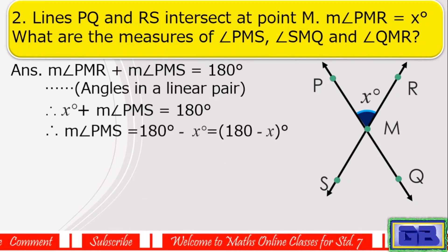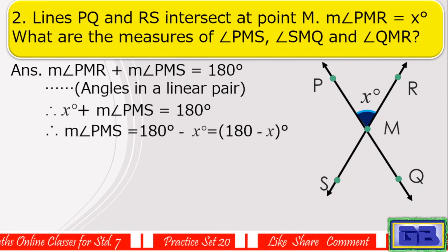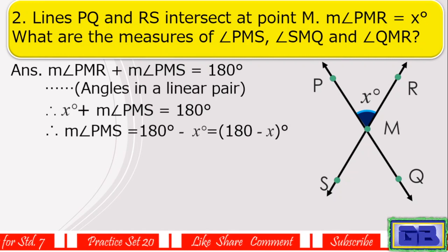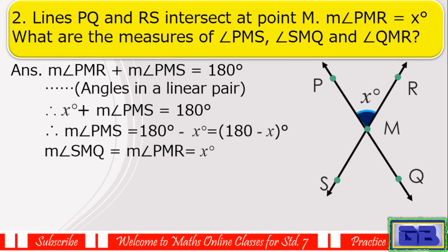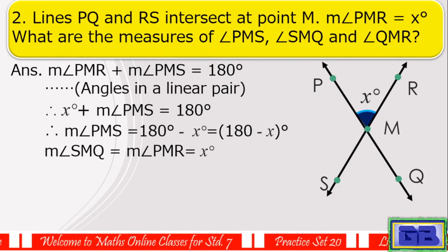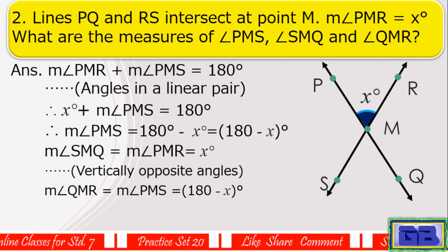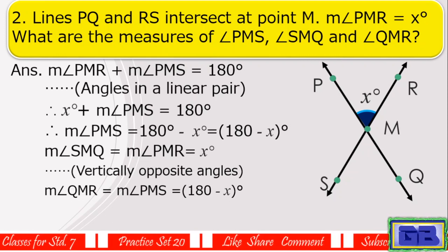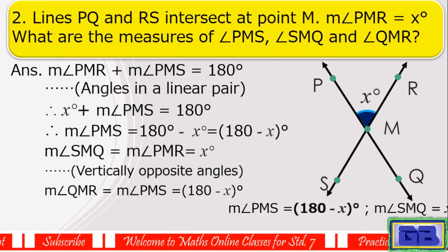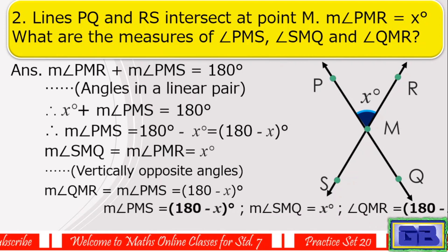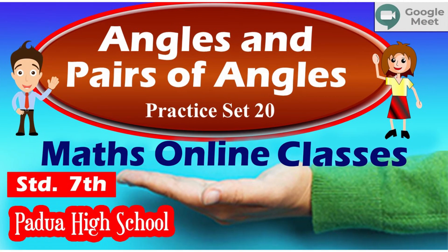Therefore, measure of angle PMS equals 180 degrees minus x degrees, which equals (180 − x) degrees. Measure of angle SMQ equals x degrees and measure of angle QMR equals (180 − x) degrees. That's all for this lecture.